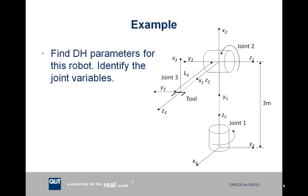To assign the x1 axis, which is located at joint two, we need to note that the z0 and z1 axes intersect, and that x1 has to be perpendicular to both of these axes. The direction, whether we put it into the page or out of the page, is arbitrary. In this case we've put it out of the page, and then using the right-handed rule, we can work out that the y1 axis must be pointing downwards.